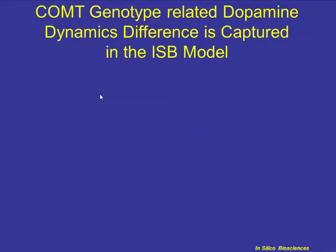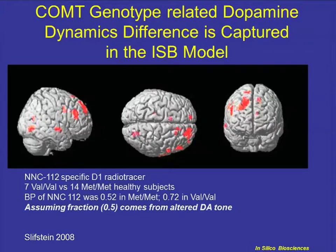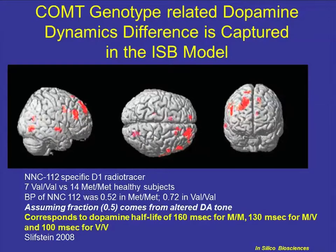As an example, we brought in the effect of the COMT genotype based on a clinical imaging study from Slifstein in 2008, in which they looked at healthy unmedicated volunteers with different COMT genotypes and measured the binding of a specific D1 PET tracer, NMC112. Because the COMT enzyme drives the breakdown of dopamine, there was differential binding potential in Met/Met versus Val/Val subjects. From that study, we calculated that the dopamine half-life in our model would go from 160 milliseconds for Met/Met subjects to about 100 milliseconds for Val/Val subjects. This suggests we can develop an individualized model for a subject with a certain combination of genotypes to look at the impact on the dose-response of a novel investigative compound.